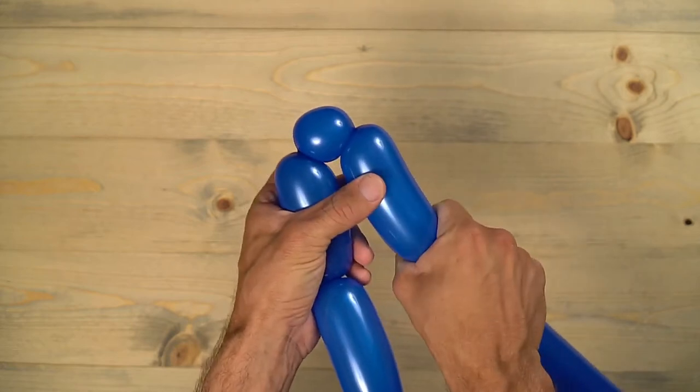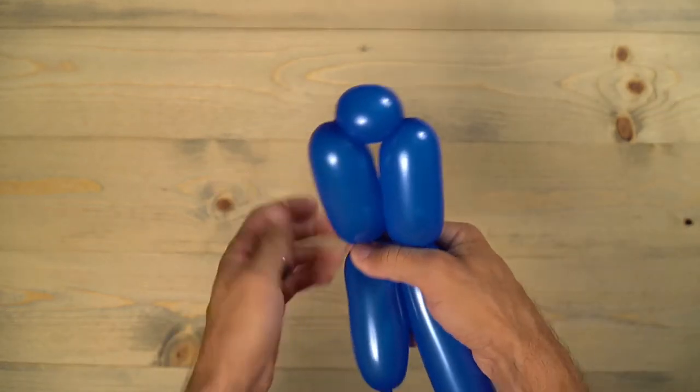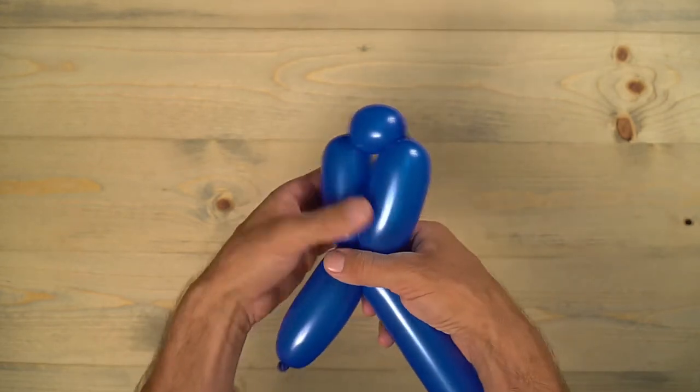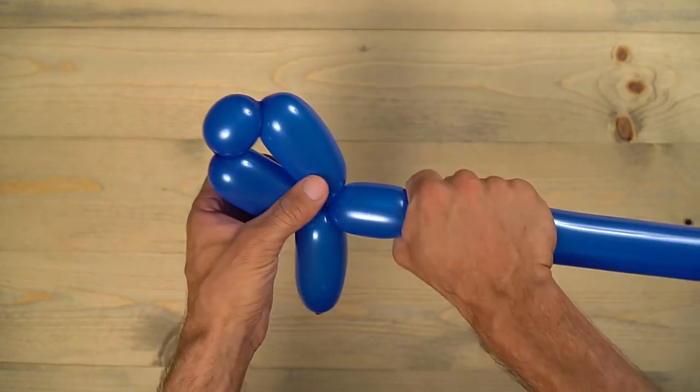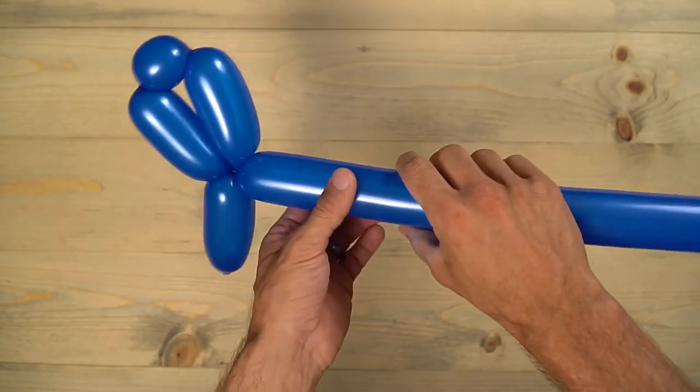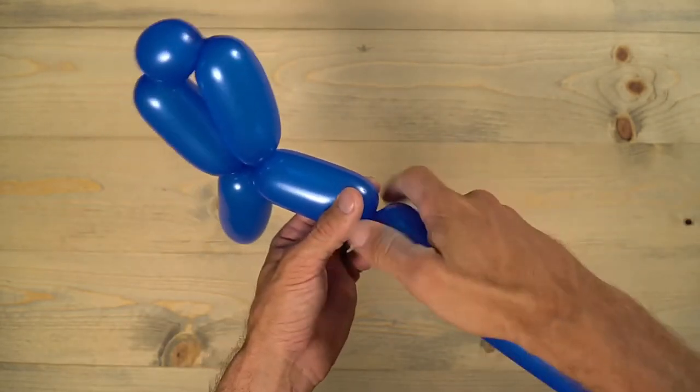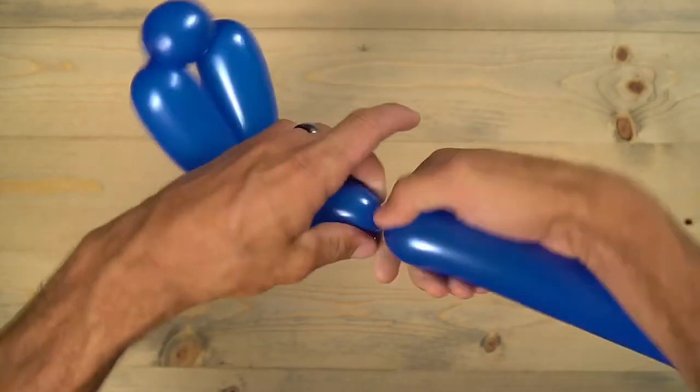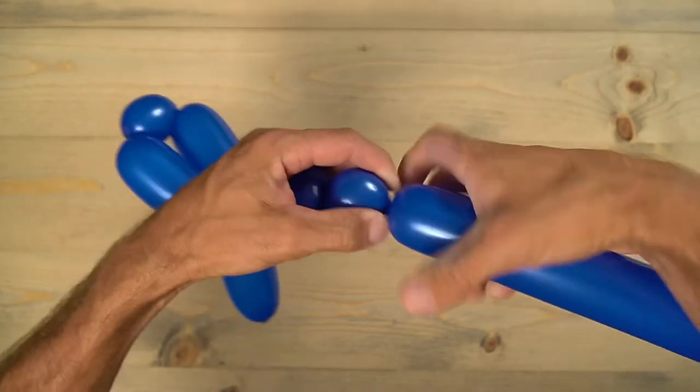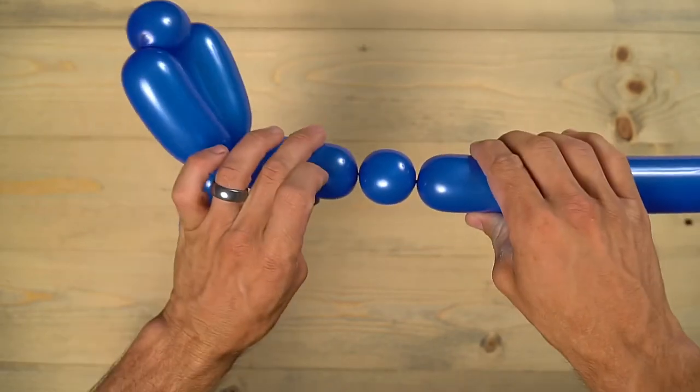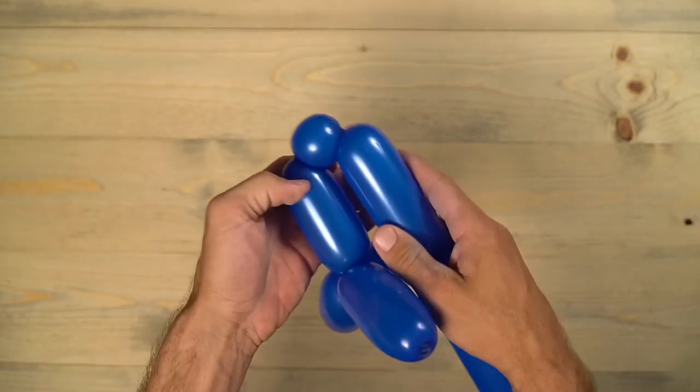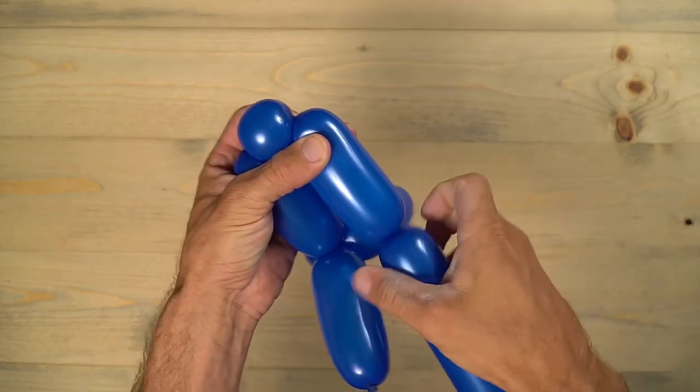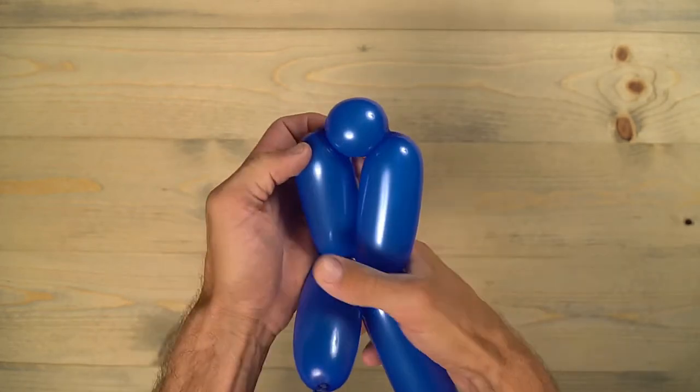But first, I'm going to make the other side the same as the one I had made previously. So wrap that in place. Now you're going to do the same process on the other side. Twist that in there and make a one inch bubble, and then bring that back around so it matches the other side. Twist it in, and you're going to twist that all in place right there.